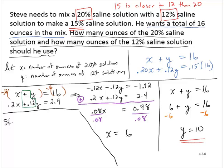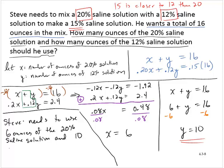Alright, so conclusion: Steve needs to use 6 ounces of the 20% saline solution and 10 ounces of the 12% saline solution. I'll see you next time.